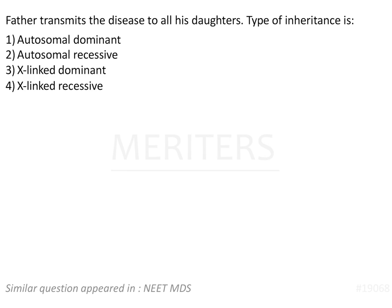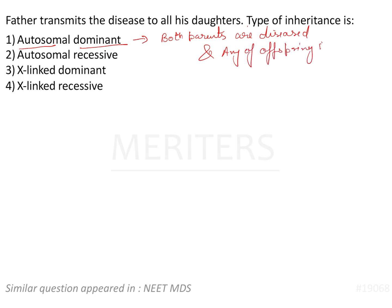I will be giving you some identifier statements to help identify the kind of trait and to solve the pedigree. For autosomal dominant, the one-liner is: if both parents are diseased and any offspring is normal, then it is autosomal dominant.